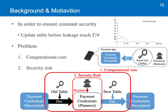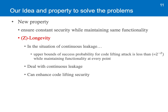Second, when it comes to security risk, re-encryption gives more chance for the adversary to see the payment credentials in plain text form. Right after the decryption of the encrypted credentials with the old table, they are in plain text form. So if the adversary stays in the system, it is possible to see them. So in order to solve these problems, we believe white box ciphers would need a new property which ensures constant security while maintaining the same functionality under continuous leakage. Because a cipher with this property would provide constant security even in the situation of continuous leakage. What's more, since a cipher with this property can maintain the same functionality, it wouldn't need re-encryption. And we define this new property as z-longevity.